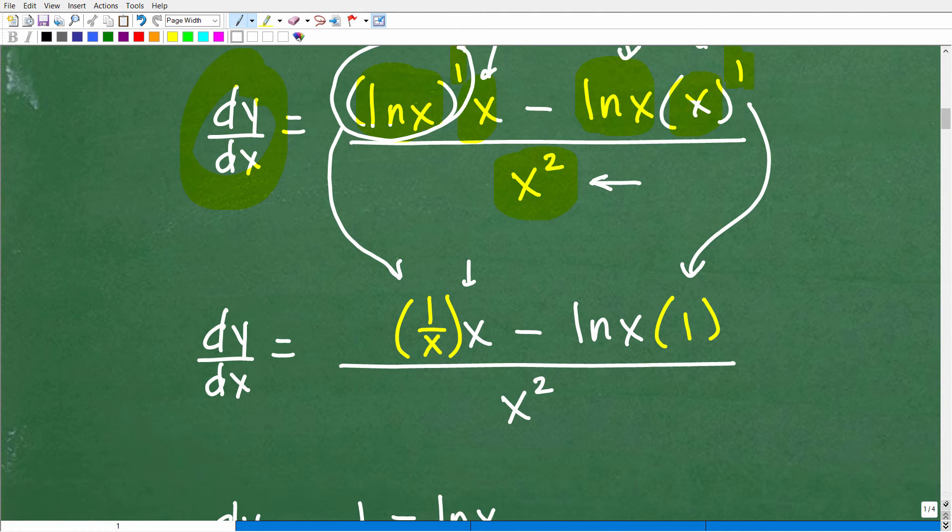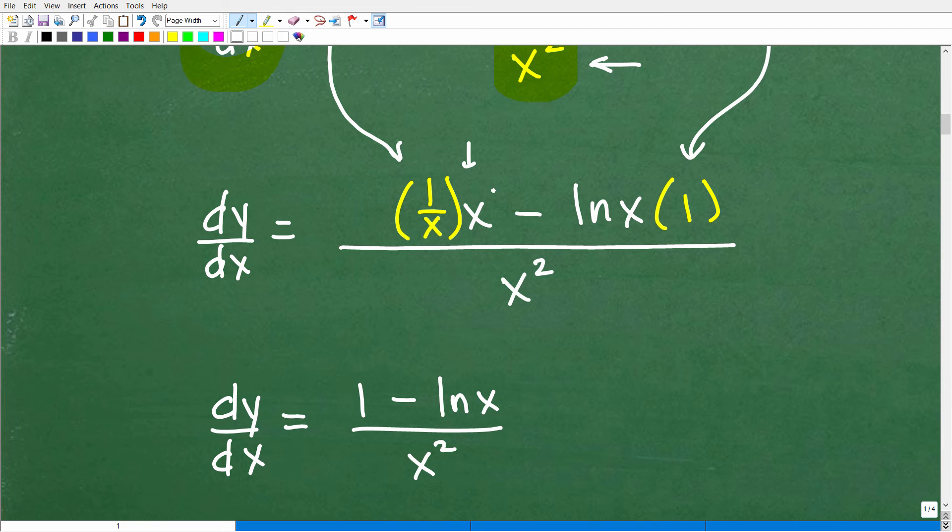Now, this is just basic simple algebra. So what's 1 over x times x? And we'll write it this way. 1 over x times x, or x over 1, of course, is just going to be 1. So that is 1 right here, minus ln(x) times 1, of course, is just going to be ln(x) over x squared, and this is the solution.